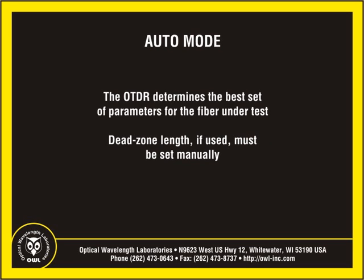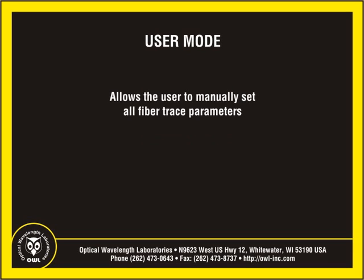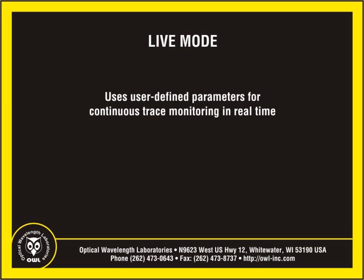In Auto mode, the OTDR automatically determines the best set of parameters based upon the fiber under test, except for dead zone length. Semi mode uses all manually set parameters except for pulse width. User mode allows the user to set all parameters manually. Filter mode is the same as user mode, with some additional filtering that smooths the trace, producing a cleaner looking trace. Live mode uses user-defined parameters for continuous trace monitoring in real time.